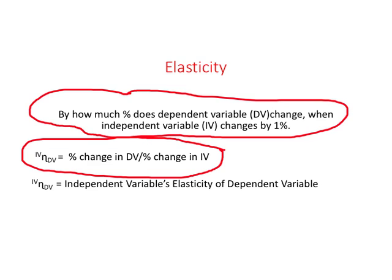Now, something about nomenclature: how do we write elasticity? I write it like this. IV stands for independent variable. This Greek letter stands for elasticity. And DV is the dependent variable. This is very systematic — how would you read this? It will be: independent variable's elasticity of dependent variable.